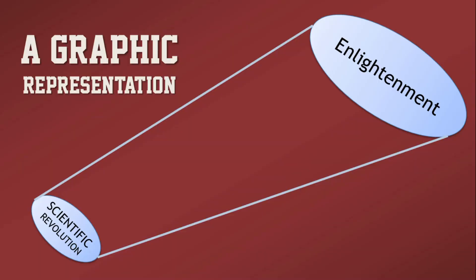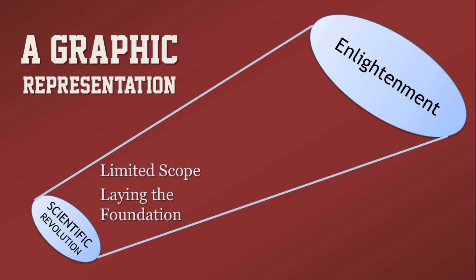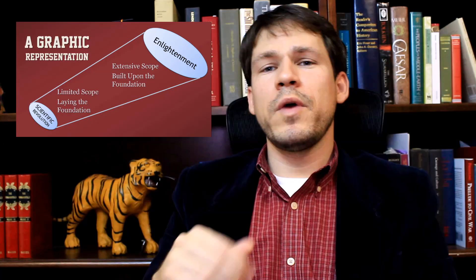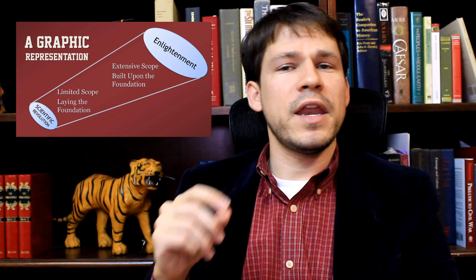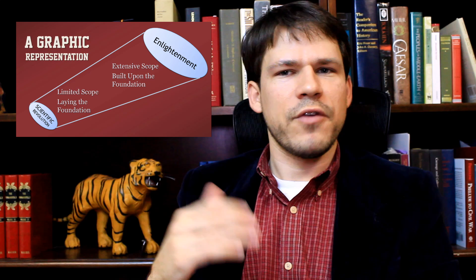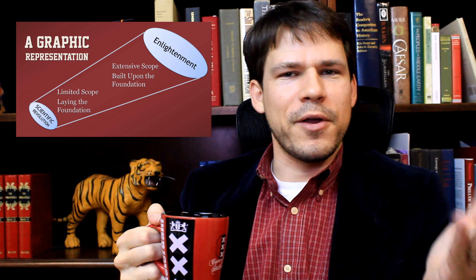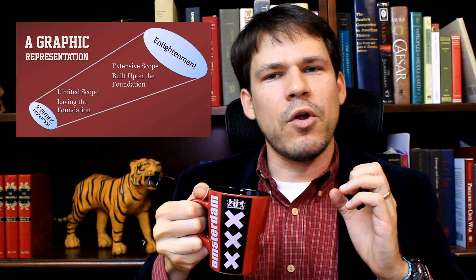Here's a quick graphic representation of the way I'm envisioning the scientific revolution and the Enlightenment: the scientific revolution is of limited scope, laying the foundation for the Enlightenment, which is much more ambitious and extensive. Sometimes I say the Enlightenment was the scientific revolution on crack — we're taking what started as a limited movement and applying these principles on a much broader scale.